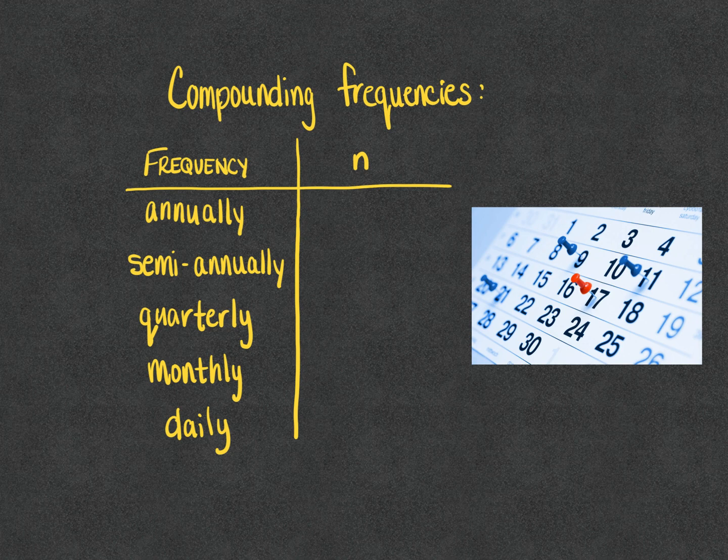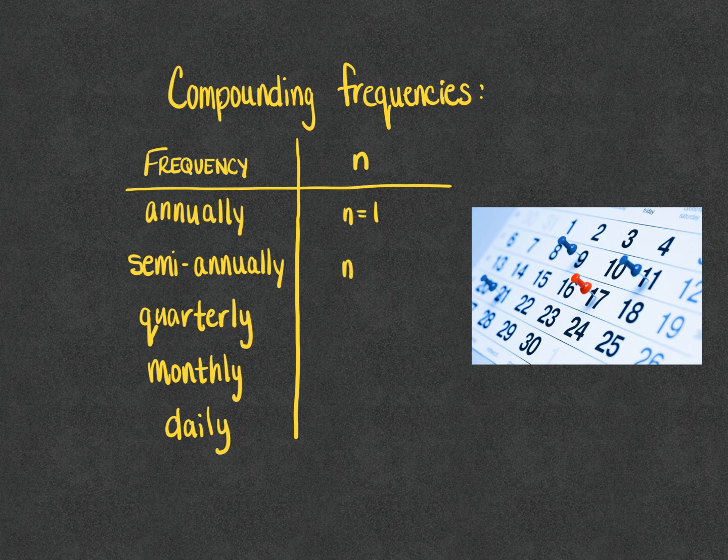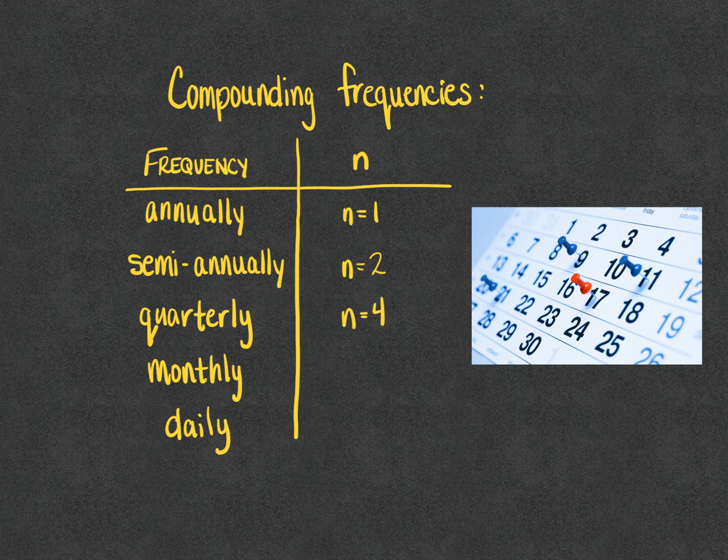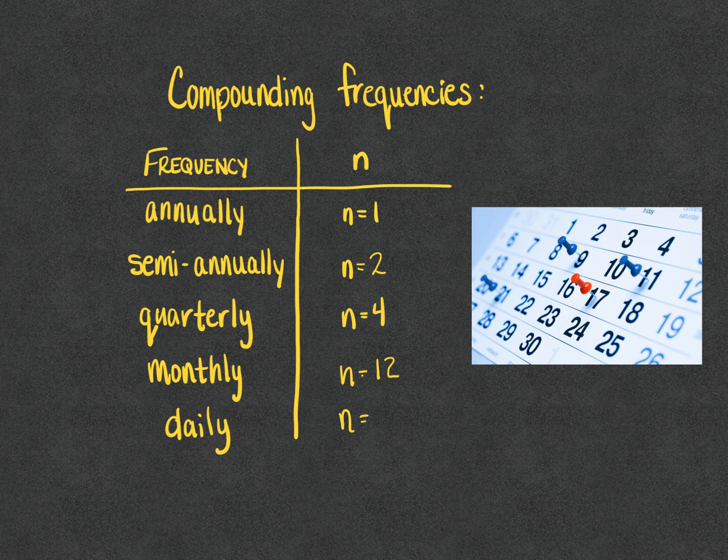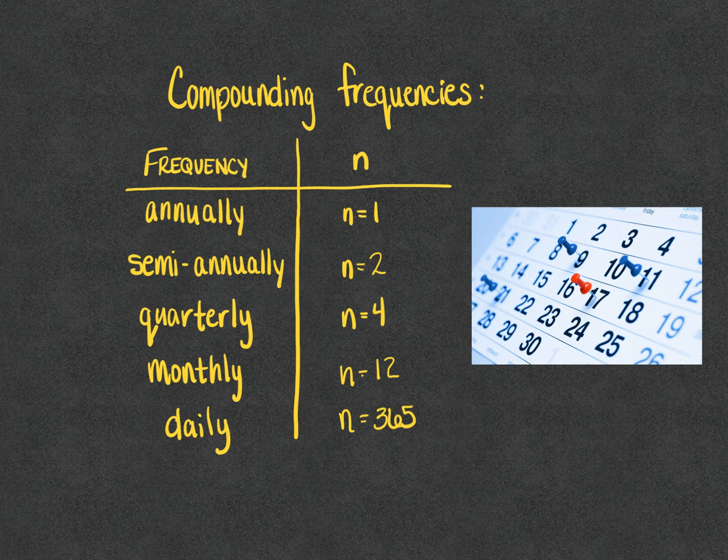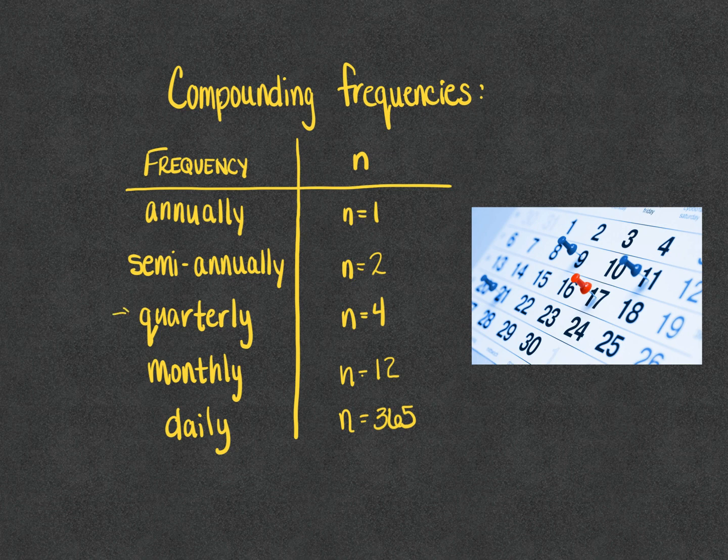If interest is compounded annually that means the value of n is 1; semi-annually n is 2; quarterly n is 4; monthly would be n is 12; and daily we're going to use n is 365. For practical uses, I think at most banks and credit unions quarterly and monthly are the two that you will see the most often.